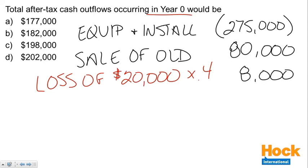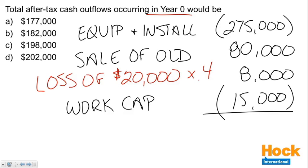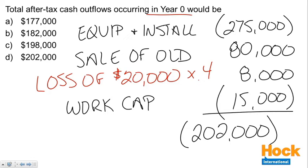The last cash flow to account for in year zero is the increase in working capital. Current assets increase by $30,000 and current liabilities increase by $15,000, giving a net $15,000 increase in working capital, treated as a cash outflow. So we have two cash outflows: $275,000 and $15,000, totaling $290,000. We have $88,000 of cash inflows, giving a net cash outflow of $202,000.